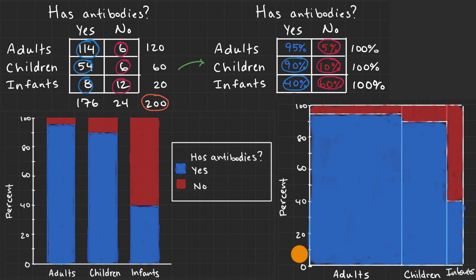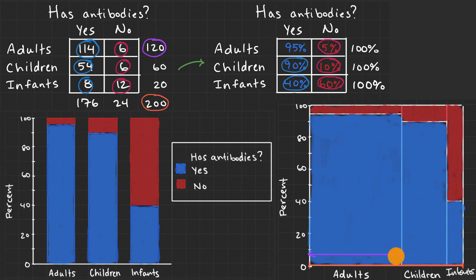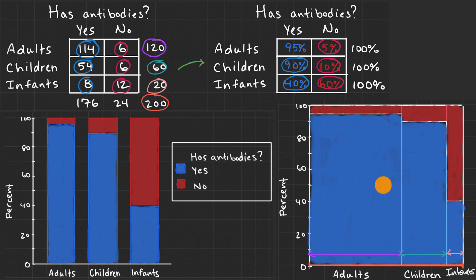We tested 200 people total, so the full width represents 200. The width of the adults bar is 60% of the entire width, since we tested 120 adults out of 200. The children bar represents 60 out of 200, or about 30% of the entire width. And the infants section is the narrowest, since we tested the fewest — just 20 infants. The mosaic plot conveys all the same information as the segmented bar chart, but also gives us a sense that we tested more adults than children and far more children than infants.